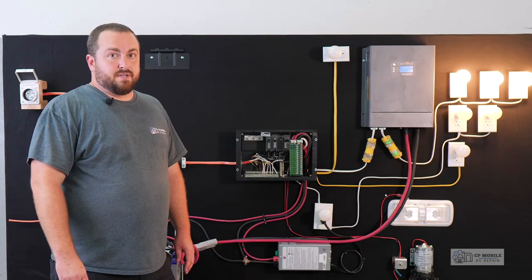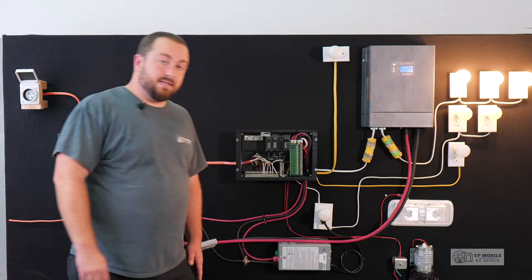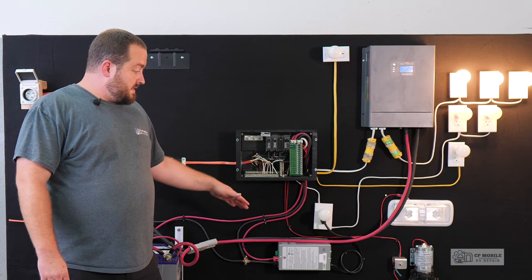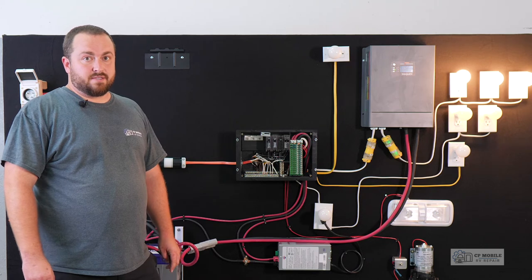It's also important to note that we are not providing power to our converter. We can see that this light, where our converter is plugged in, is not on at the moment. If we use an inverter and power our converter, we end up with a power loop which unnecessarily drains our batteries.